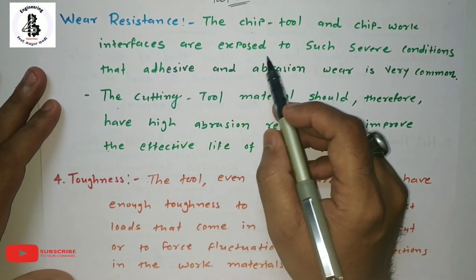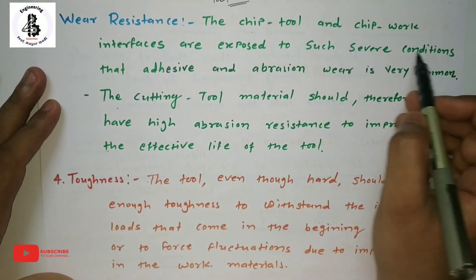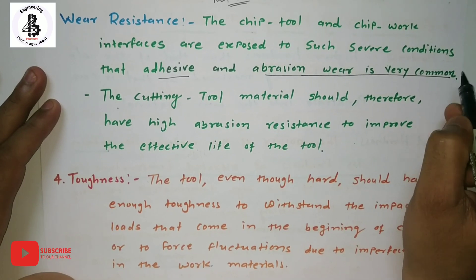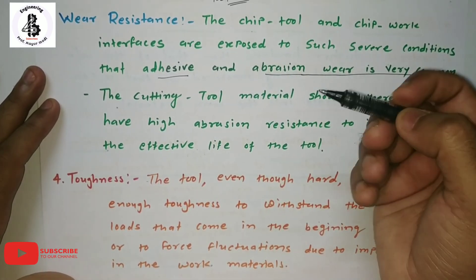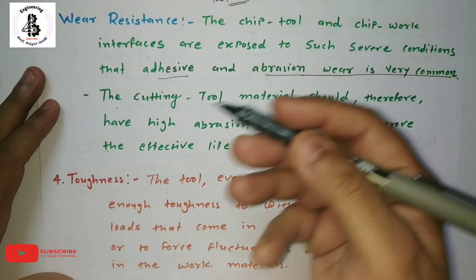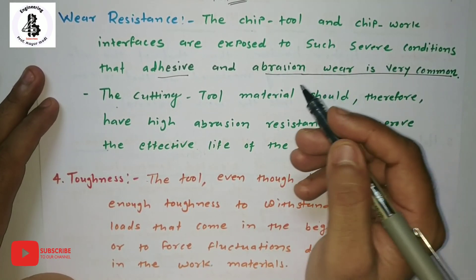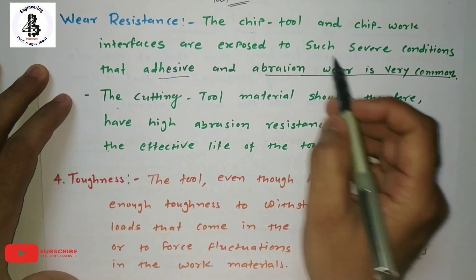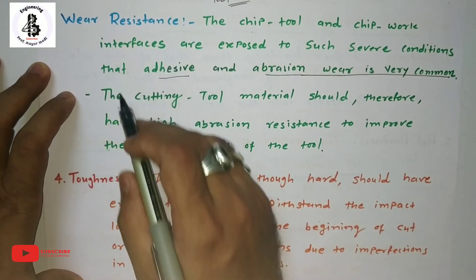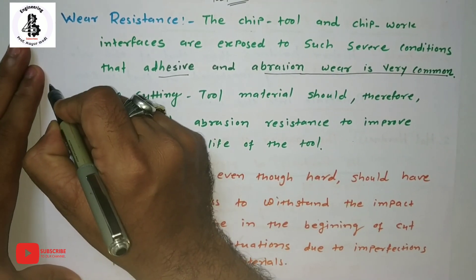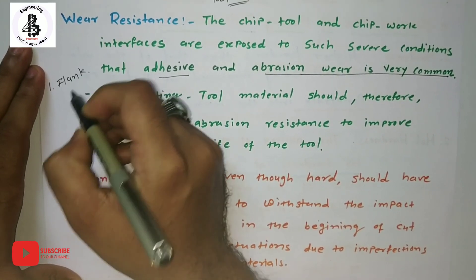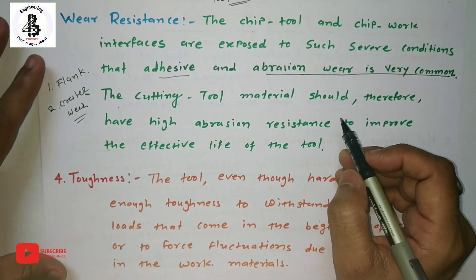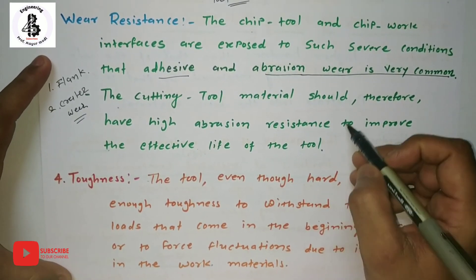The chip-tool and workpiece interface are exposed to severe conditions, so adhesive wear is common. Due to wear and tear, chips flowing over the tool surface cause adhesive-type wear. Basically, wear of the tool material occurs in two types: flank wear and crater wear. These two kinds of wear take place in single-point cutting tools.